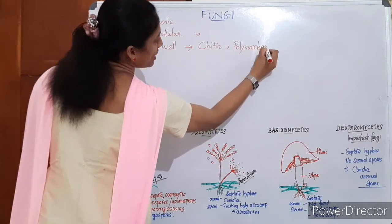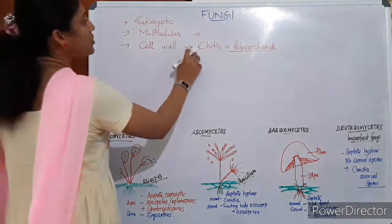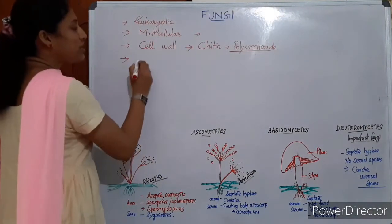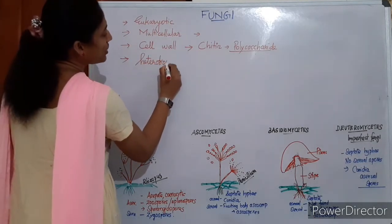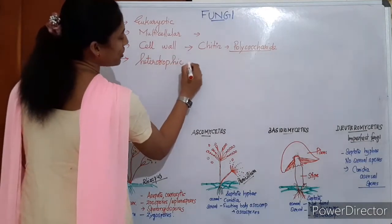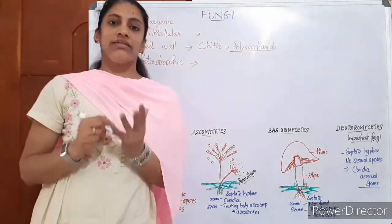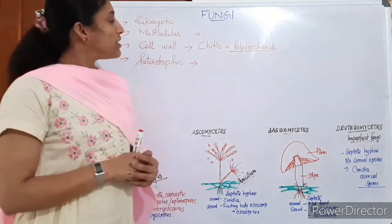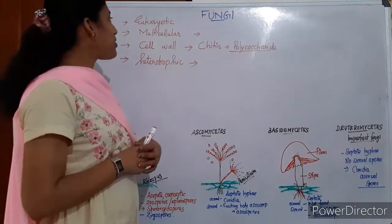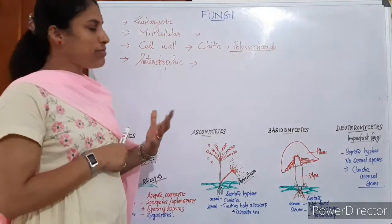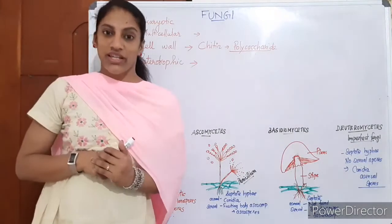Cellulose is a polysaccharide; chitin is another polysaccharide, specifically a heteropolysaccharide. So the cell wall is made up of chitin. Another important feature: unlike plants, fungi are heterotrophic — they show heterotrophic nutrition. No fungus is autotrophic. These are the characteristic features of fungi: eukaryotic, multicellular (except some members), chitinous cell wall, and heterotrophic nutrition.